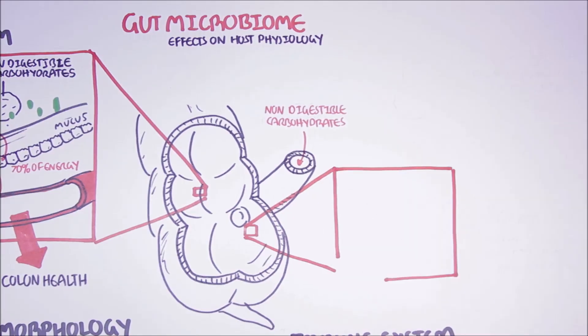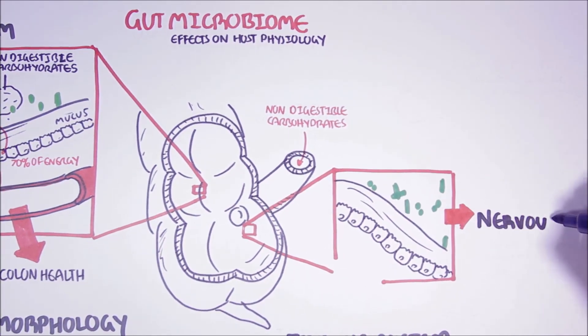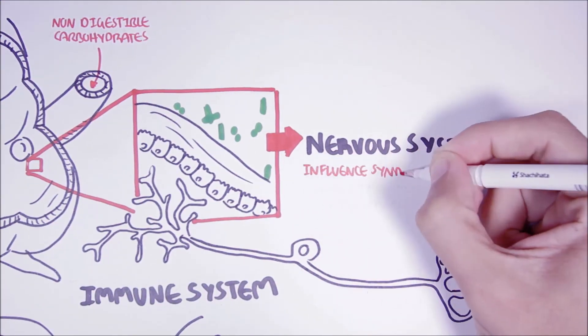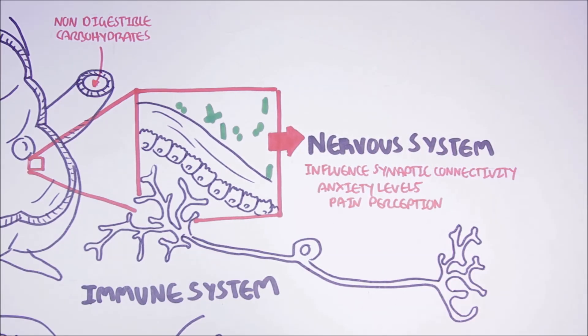The gut microbiome also has effects on the nervous system. Most of these effects are based on animal studies and include decreasing synaptic connectivity and promoting anxiety-like behaviors, as well as pain perception.